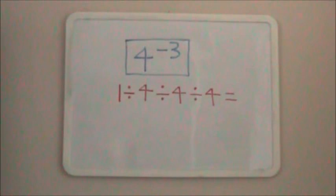Therefore, we can express the problem as 1 divided by 4 divided by 4 divided by 4. This gives us an answer of .15625 or 1 over 64.